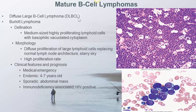Prognosis depends on age, site involved, and extent of the disease. Burkitt lymphoma consists of medium-sized, highly proliferating lymphoid cells with basophilic vacuolated cytoplasm. Diffuse proliferation of large lymphoid cells replaces normal lymph node architecture, looking like a starry sky at low magnification, as shown in the image here.